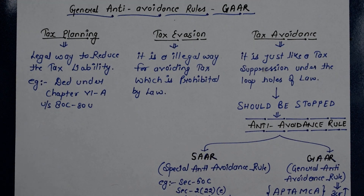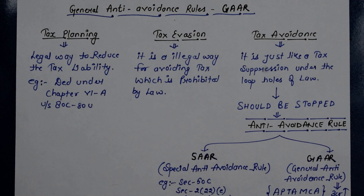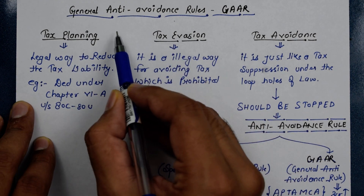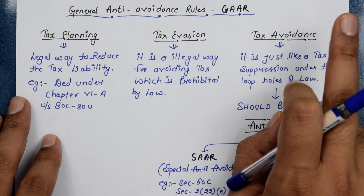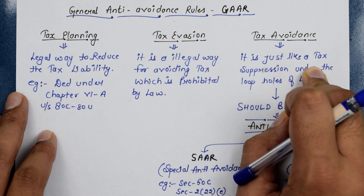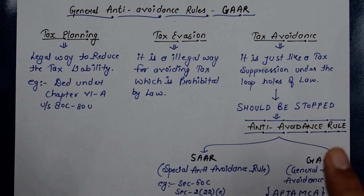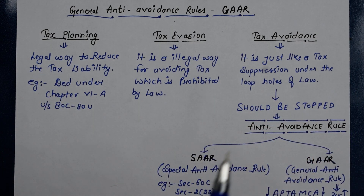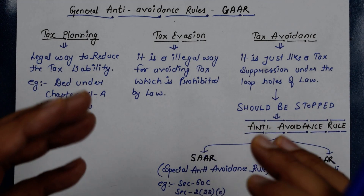The third term is tax avoidance. Tax avoidance is different from tax evasion. In tax avoidance, you are trying to reduce your tax liability using methods that the government thinks are wrong, but which are technically not illegal. It may be possible that the laws are not so clear, and clever individuals exploit that. The government considers it wrong, but it does not happen to be illegal.